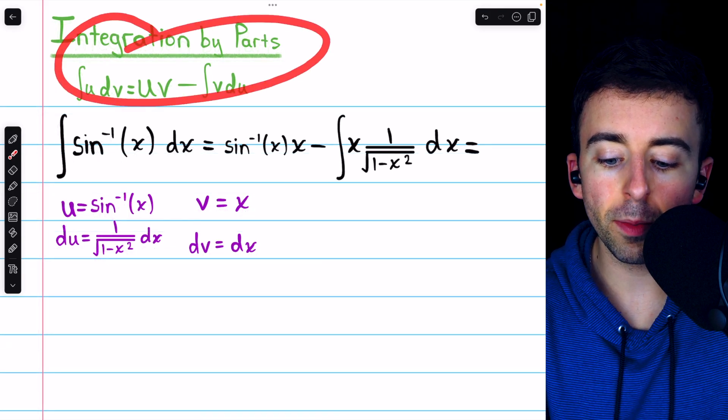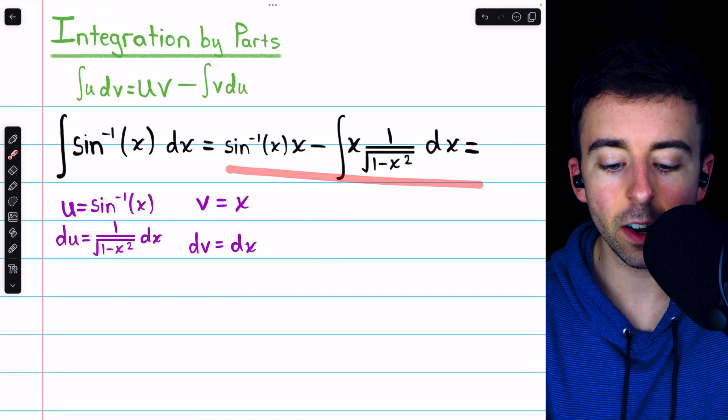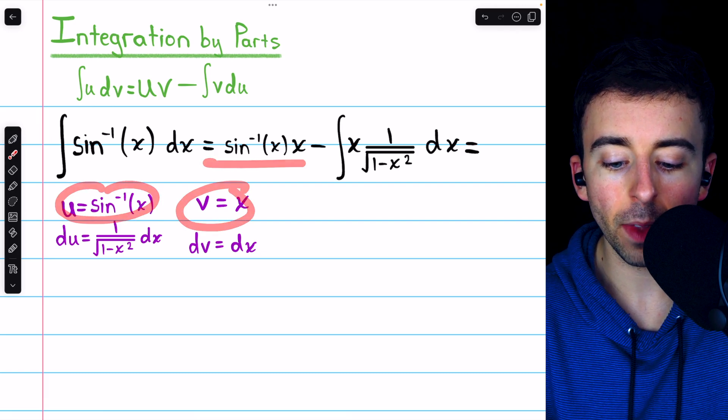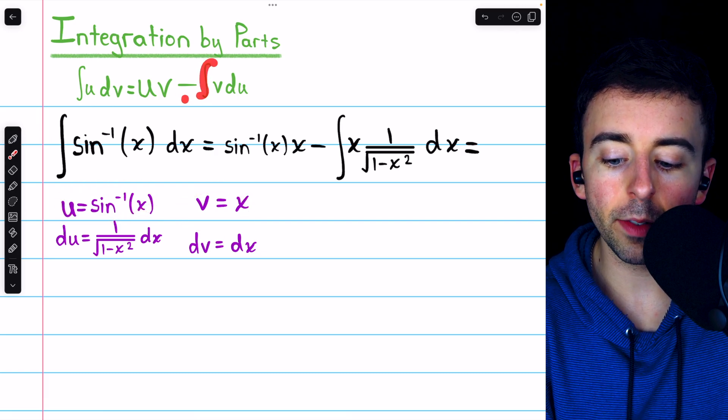Then applying the integration by parts formula gets us here. We have u times v, which is arc sine of x times x, and then minus the integral of v du.